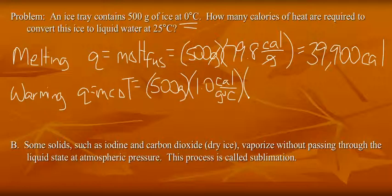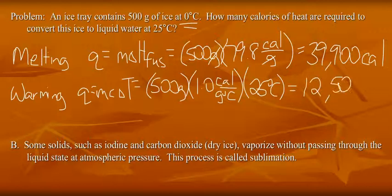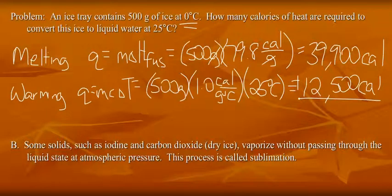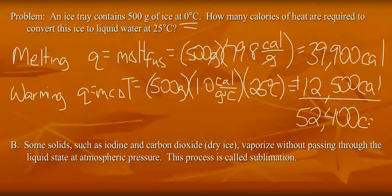And delta T, we want to go up to 25 degrees from zero. So the change is 25 degrees Celsius. That will require 12,500 calories. And so the entire process will require 52,400 calories of energy.